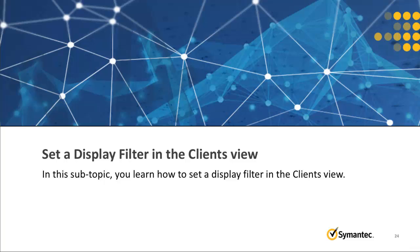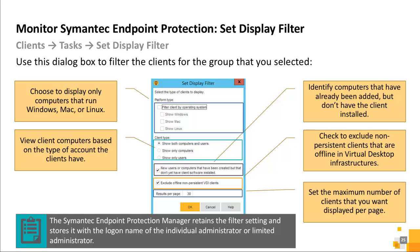Use the Display Filter dialog box to filter the clients for the group that you selected. You can choose to display only computers running Windows, Mac, or Linux, or view client computers based on the type of account the clients have. The Set Display Filter can also be used to identify added computers that don't have Symantec Endpoint Protection installed, and you can exclude offline non-persistent clients in virtual desktop infrastructures. You can also set the maximum number of entries displayed per page.